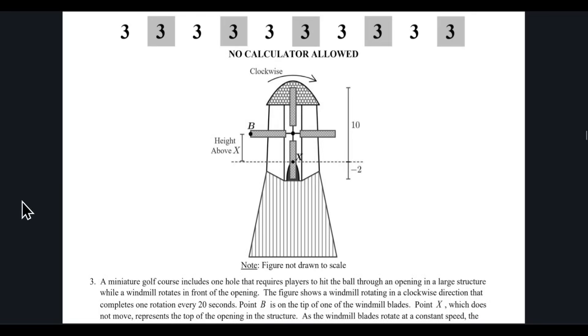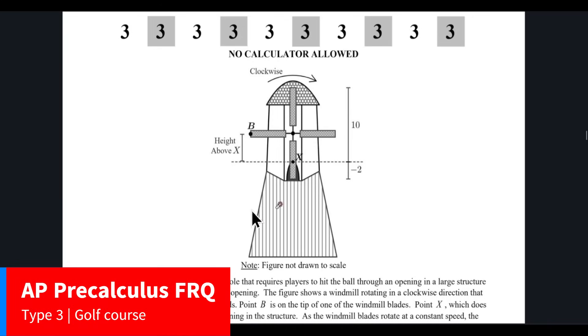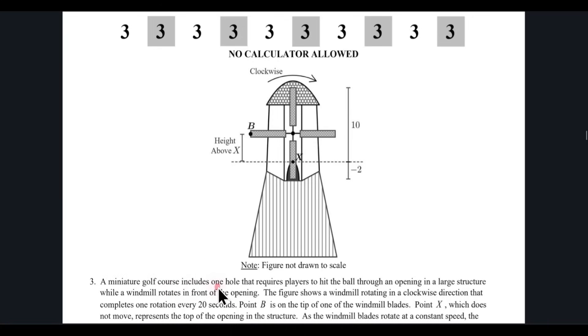Over here we are given a windmill. This is actually a situation of a miniature golf course that includes one hole that requires players to hit the ball through an opening in a large structure while the windmill rotates in front of the opening. So I'll explain the scenario.